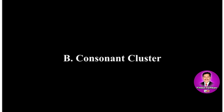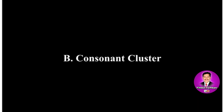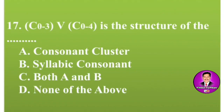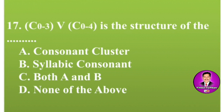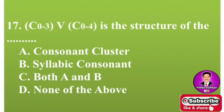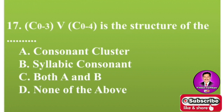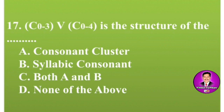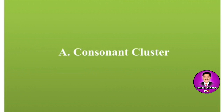This is the last MCQ. The formula (C 0-3) V (C 0-4) — meaning consonant 0 to 3, vowel, consonant 0 to 4 — is the structure of the dash-dash-dash. Options are A: consonant cluster, B: syllabic consonants, C: both A and B, D: none of the above. The correct answer is A — it is the structure of consonant cluster, representing the limitations to the releasing and arresting consonants.